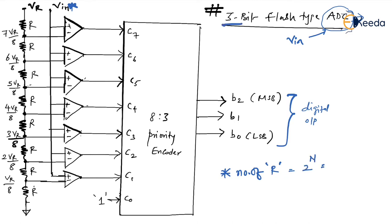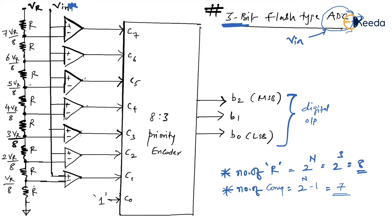For a 3-bit ADC, n equals 3, so 2 to the power 3 is 8 resistors. The number of comparators is 2 raised to n minus 1, which is 7, because 2 to the power 3 is 8, and 8 minus 1 is 7. These 8 resistors form a voltage divider.